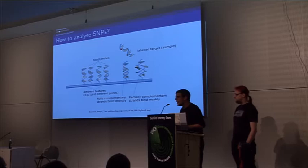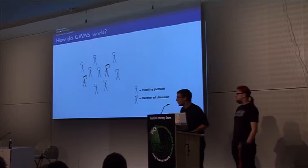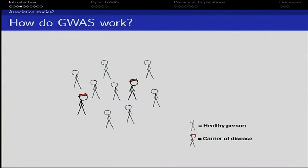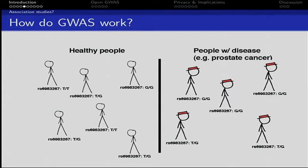Genome-wide association studies work by taking a whole population and grouping it into two groups. Here we have a healthy person and a carrier of a disease. In this example, let's say it's prostate cancer. We have the healthy people on the left and the prostate cancer people on the right.